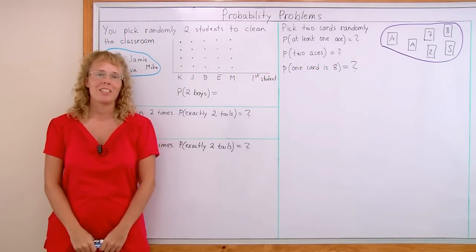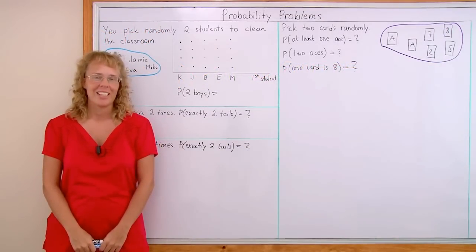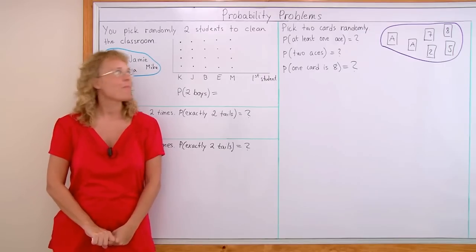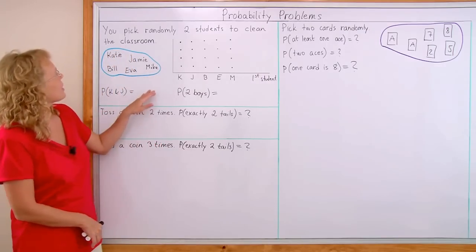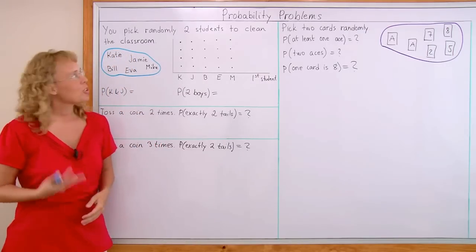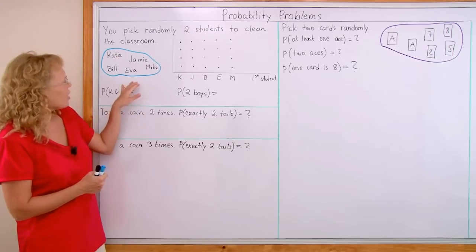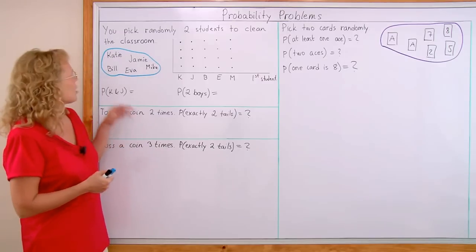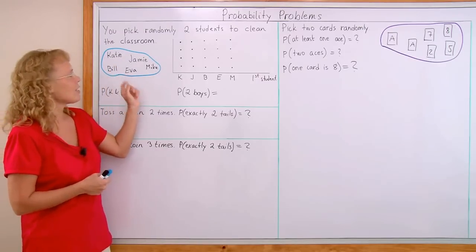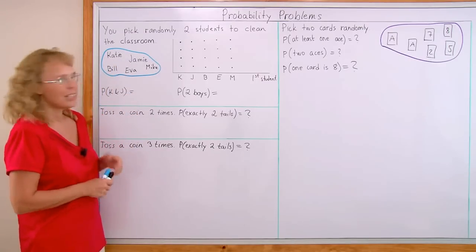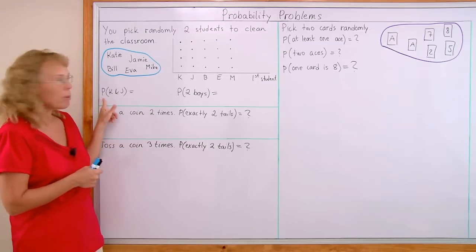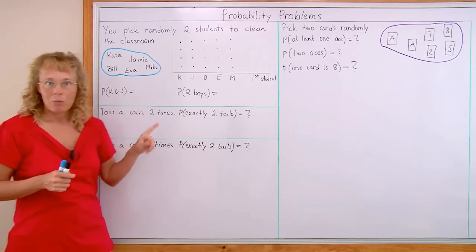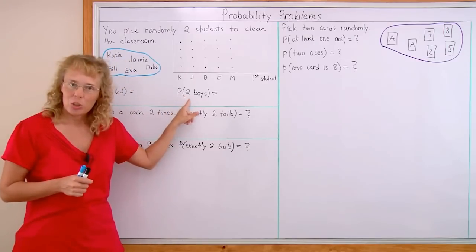Hello, my name is Maria Miller from MathMammoth.com. In this video we're going to study through some probability problems. My first problem is: you pick randomly two students to clean the classroom. I have a set of five students to keep the problem simple: Katie, Jamie, Bill, Eva and Mike. The question is: what's the probability of picking exactly Katie and Jamie? And then what's the probability of picking two boys?